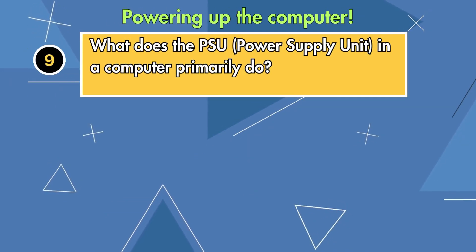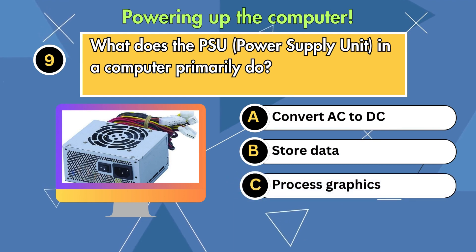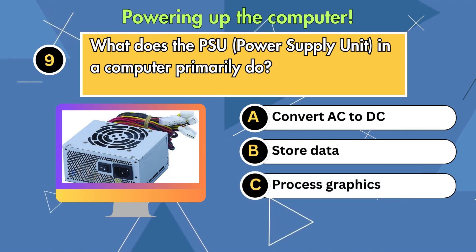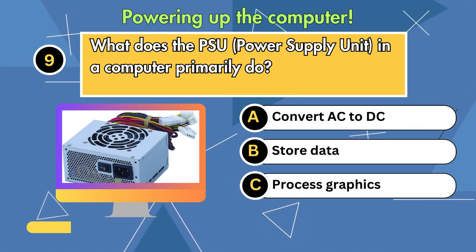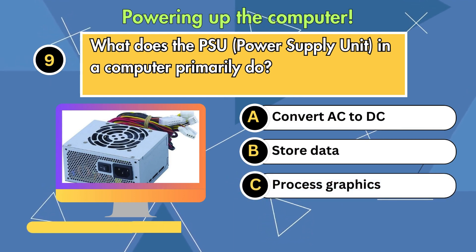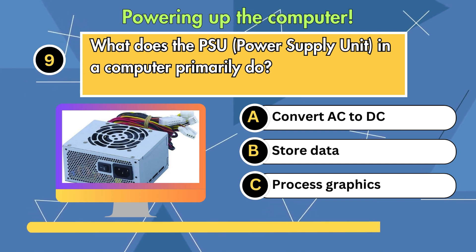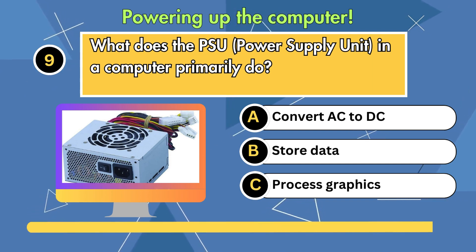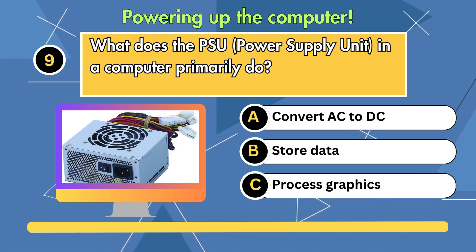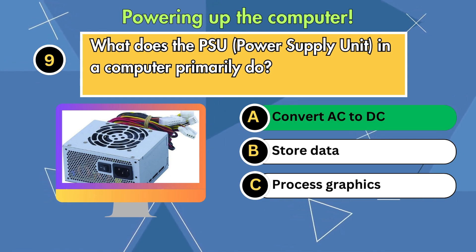Question 9. What does the PSU (power supply unit) in a computer primarily do? Option 1: Convert AC to DC. Option 2: Store data. Option 3: Process graphics. Answer is convert AC to DC.